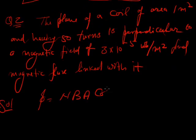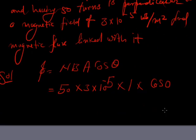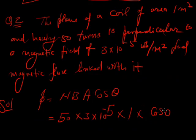We know that phi equals N B A cos theta, where N is 50 and B equals 3 times 10 to the power minus 5, and area is 1 meter square and cos 0. Because area vector is parallel to the magnetic field, and area vector and plane of coil are perpendicular to each other. So cos 0 is 1. So it equals 150 times 10 raised to the power minus 5 Weber. This is the amount of flux linked with the coil.